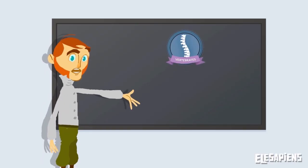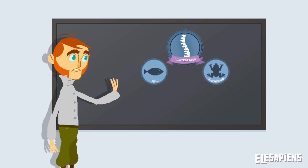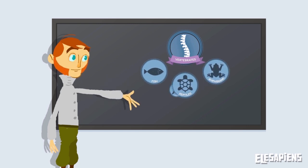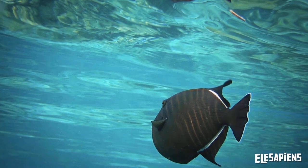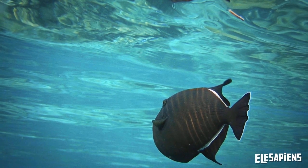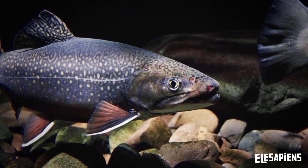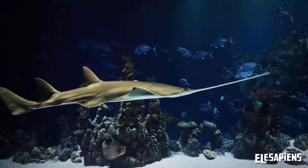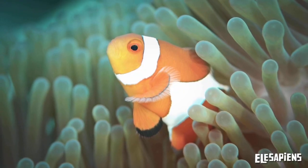Vertebrate animals can be split up into the following groups: fish, amphibians, reptiles, birds, and mammals. Fish live in rivers and seas. Their body is covered by scales. They have fins to swim around and gills that allow them to breathe under water.